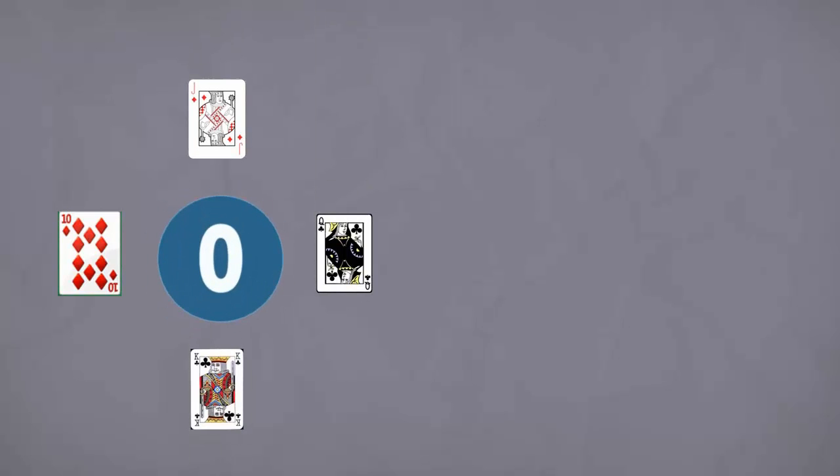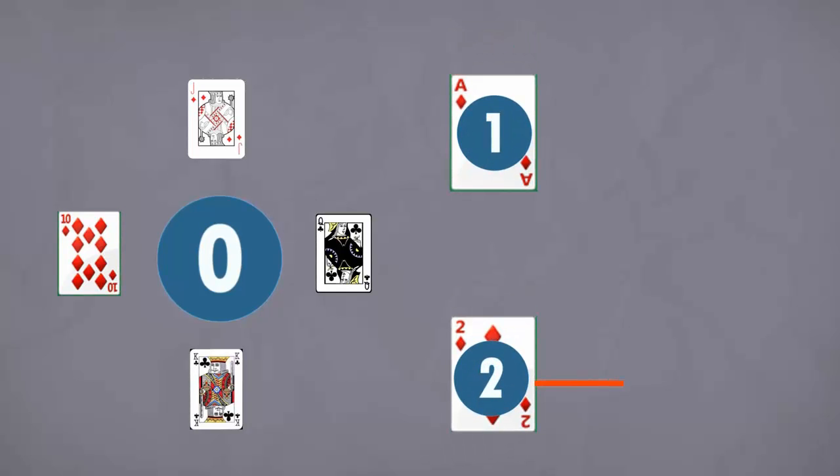jacks, queens and kings are all worth zero. Ace is worth one and cards two to nine are awarded their face value.